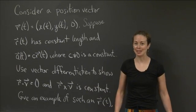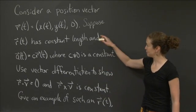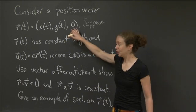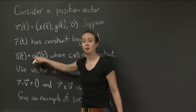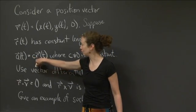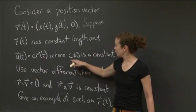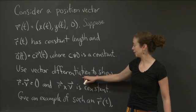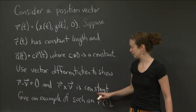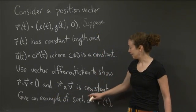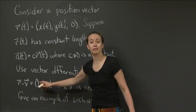Welcome back. There is a lot to do in this problem, but let me remind you of the framework. We have a position vector, and we know two things about it: it has constant length, and the acceleration is always equal to some constant times the position — I didn't give you the constant, but we know that relationship holds. We wanted to show two things using vector differentiation: that r·v = 0, and that r×v is constant. Then we want to talk about an example.